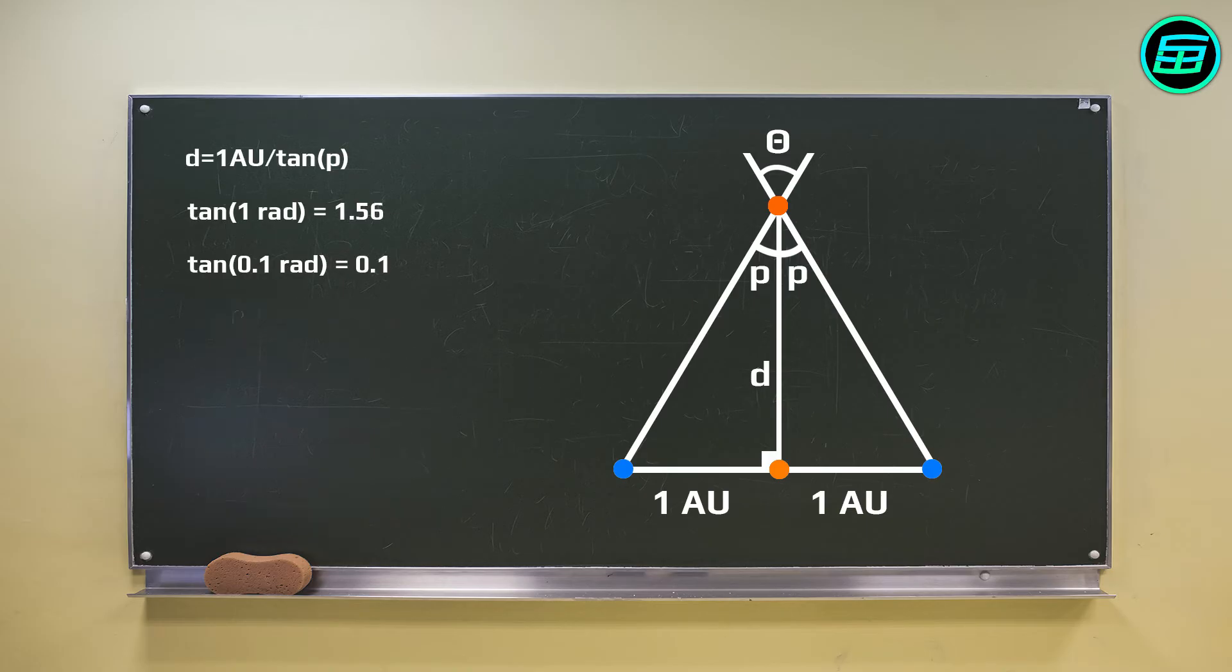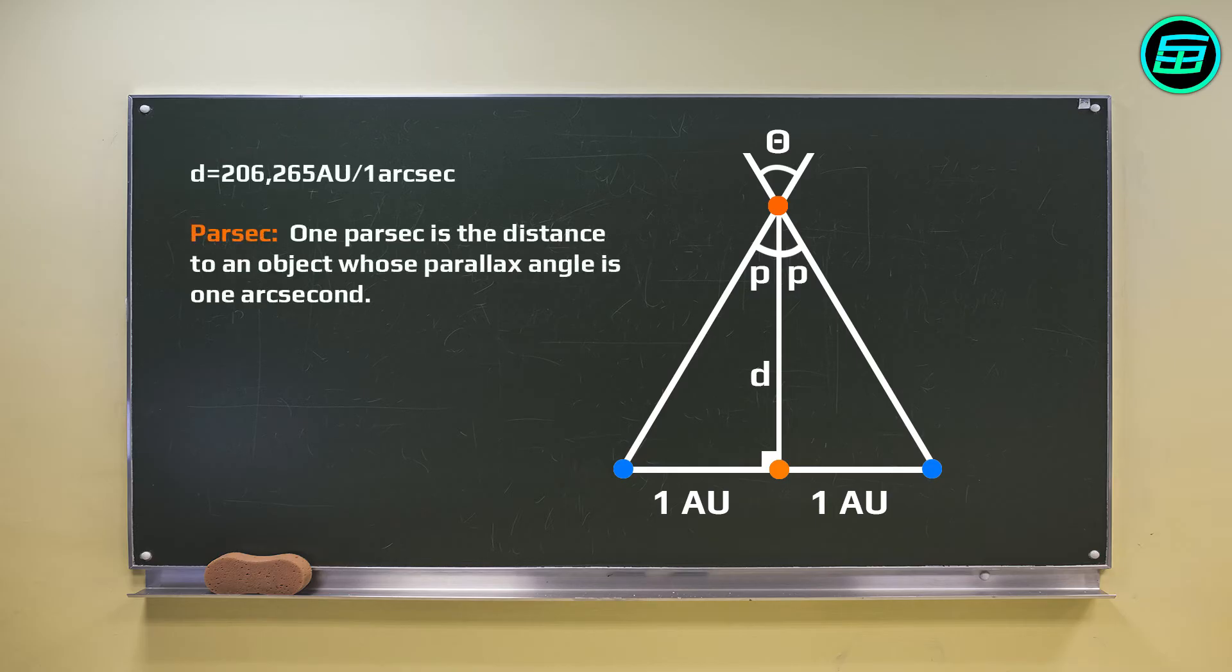Astronomers define a new distance unit, the parsec, which is equal to 206265 astronomical units, and is the distance to a star which has a parallax angle of one arc second. Now the formula becomes distance in parsecs equals one over the parallax angle in arc seconds.